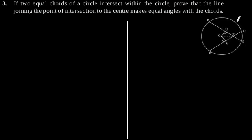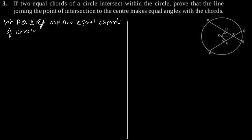Suppose this is our required figure based on the information given in the question. Let PQ and RS are two equal chords of the circle and they intersect at point T.